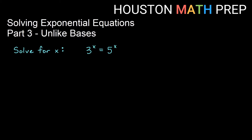Welcome back everyone. Houston Math Prep here with our part 3 video in the series of solving exponential equations, this one for unlike bases. In our first part of the series we solved with like bases. Now we're going to be looking at something like 3 to the x equals 5 to the x. 3 and 5 are not similar — I can't easily turn 3 into a power of 5.